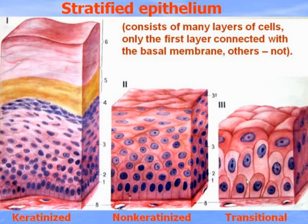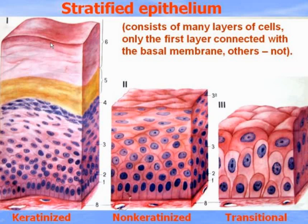In transitional epithelium there are basal, intermediate, and superficial layers of cells. In the basal layer there are stem cells, which divide actively — mitotic cells — and daughter cells, which appear from mitotic division, then differentiate, specialize, and move to the superficial layers, replacing the older cells, which are shed from the epithelium. The full replacement of cells takes about 40 days for the epidermis of skin.